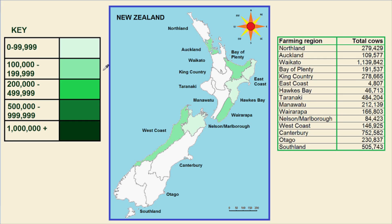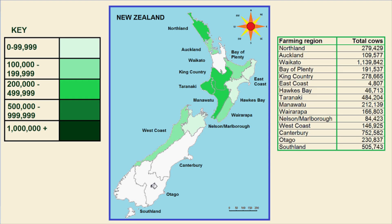Then I will shade in all the regions between 200,000 and 499,999. These regions include Northland, the King Country, Taranaki, Manawatu, and Otago.